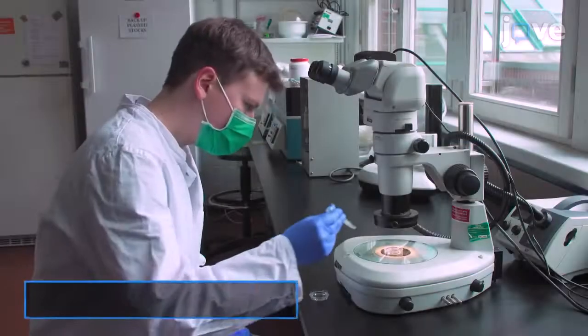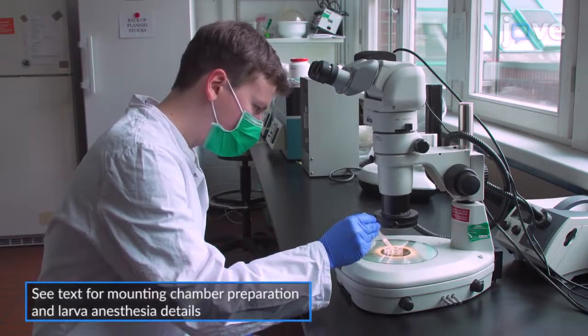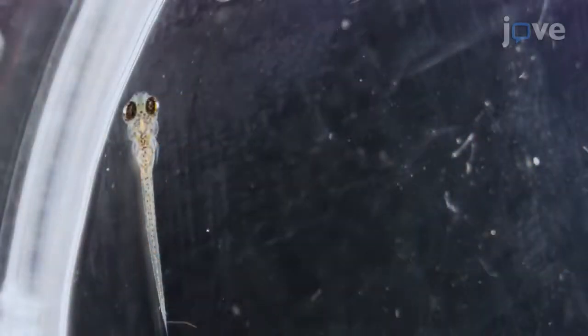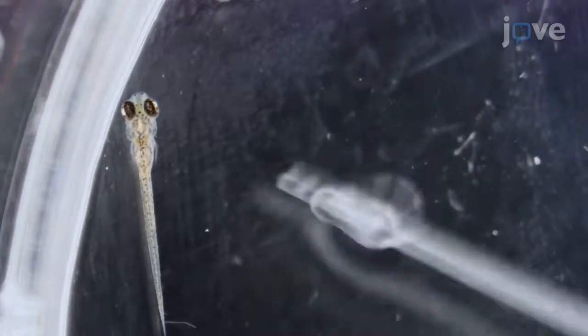To embed the larvae, use a pasteur pipette to transfer the anesthetized larvae to a mounting chamber under a stereo microscope. If any larvae are still able to move, do not use the fish for the experiment until the fish are completely unable to move. When the larvae are immobile, carefully remove the larvae.